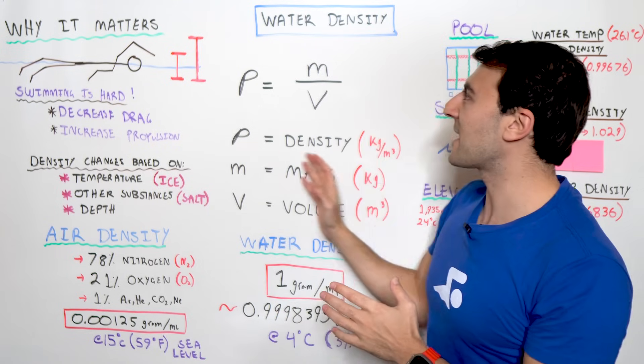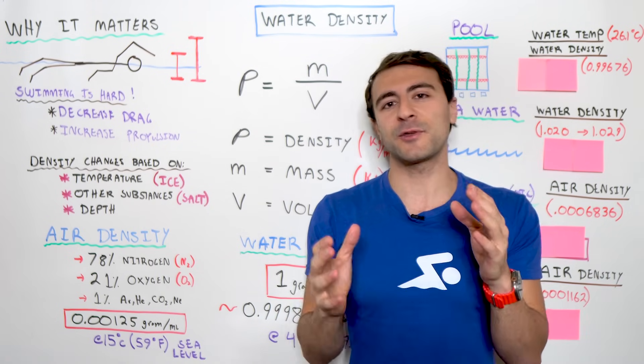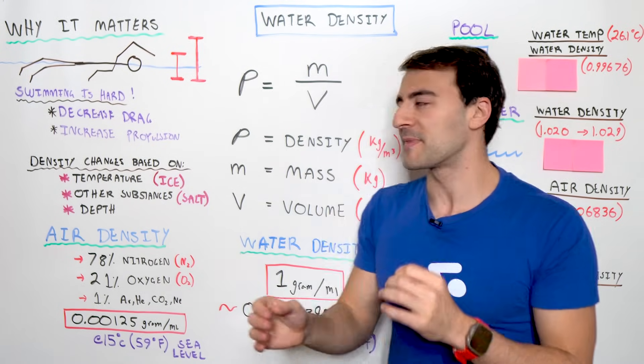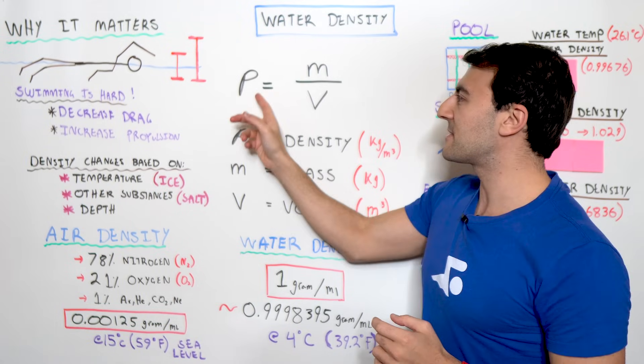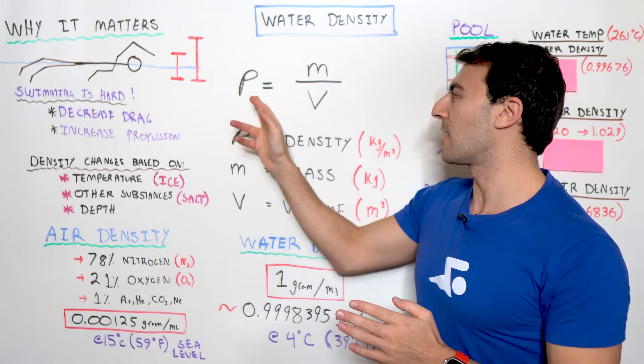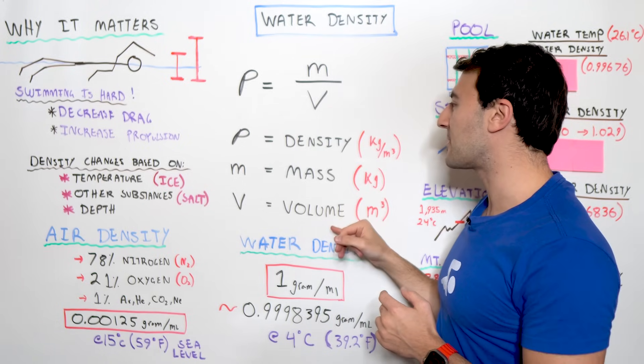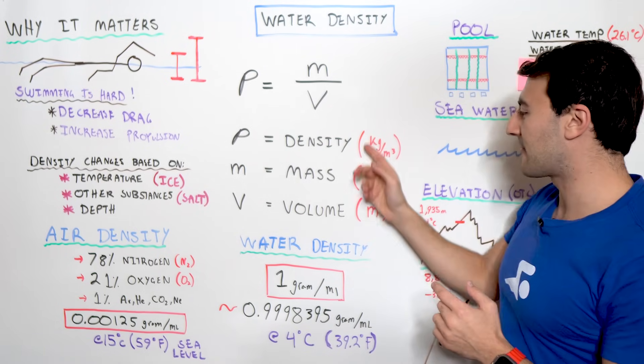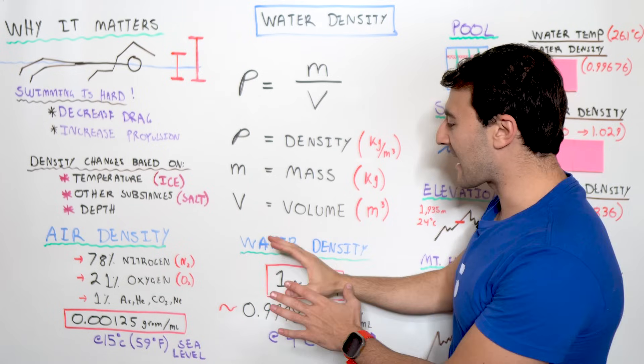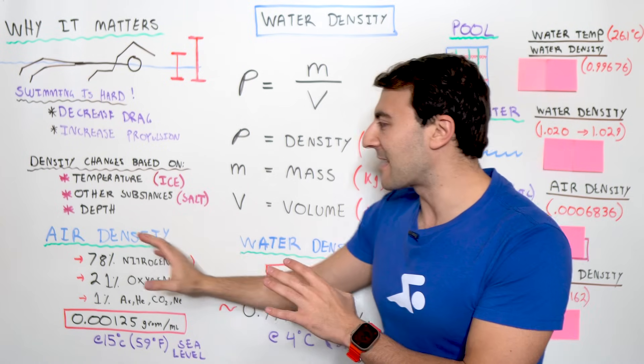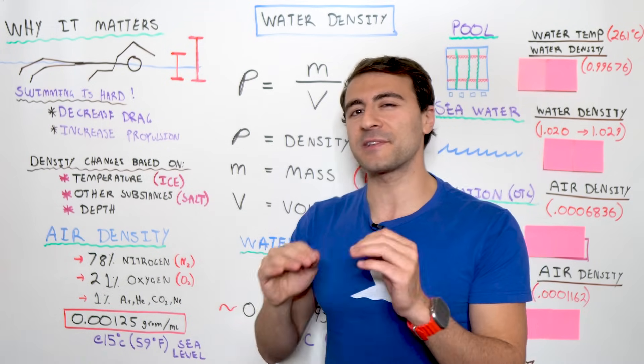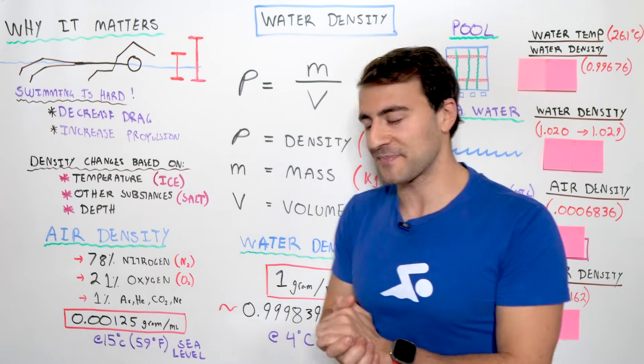Now, it's really important to understand the equation of density so that you understand the variables that make it up. So, density is represented by this ρ symbol which is called rho and that is equal to mass divided by volume with the respective measurement for each of those. Now, let's break down the density of water and the density of air and we'll see if this 800 times holds up.